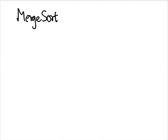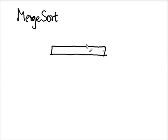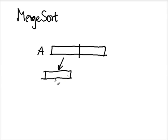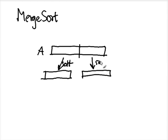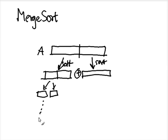We will analyze merge sort. Merge sort is a recursive algorithm. The idea is that you have an array A and you split it into two sub-arrays, sort each sub-array — that's the sub-problem — and then you merge them. To sort each sub-array, you split it again and recursively sort the smaller arrays, and so on.